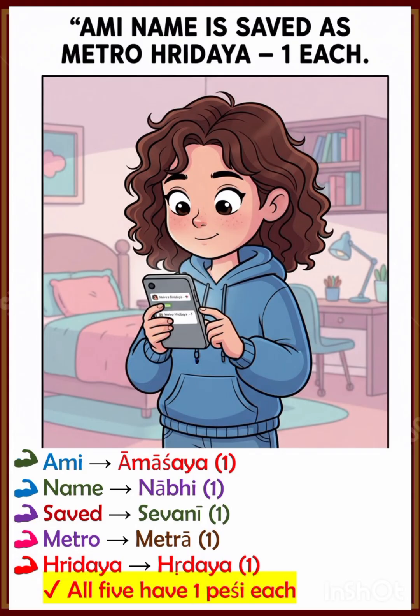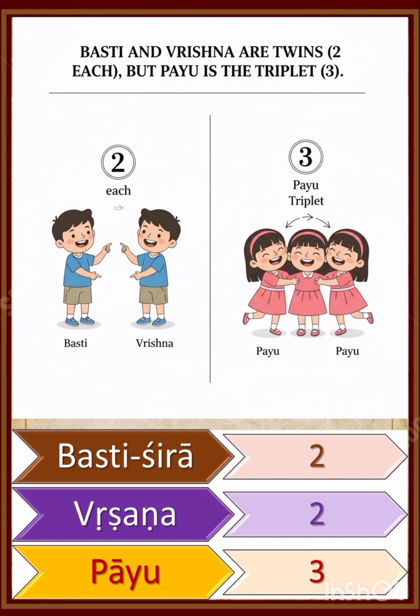Let's remember this image. Ami, Nabi, Sivani, Metra, Hridaya — all 5 have 1 Peshi each. Ami means Amashaya, Nabi means Nabi, Sivani, Metra, and Hridaya. Next: Basti and Vrishana are twins, but Payu is triplets.